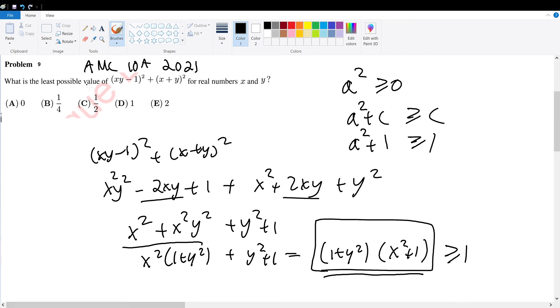So right off the bat, we can eliminate B, we can eliminate C, we can eliminate A. So we're only down with D and E.